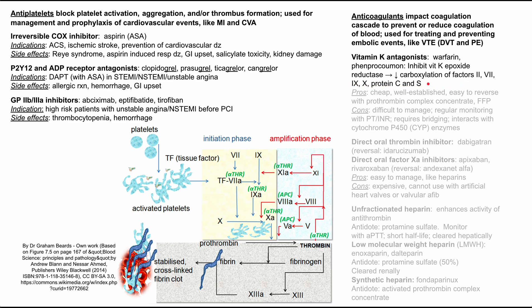Remember: 2, 7, 9, 10, and protein C and S — that's what vitamin K affects. The pros of warfarin are that it's cheap, well-established, and we understand the pharmacokinetics well. It's easy to reverse, specifically with prothrombin complex concentrate or fresh frozen plasma. The downsides are that even though we understand how it works, it's still difficult to manage. Vitamin K levels in the body fluctuate with diet — for instance, eating a lot of leafy greens one week and not the next can change the effectiveness of your warfarin dose. You need regular monitoring with PT/INR blood tests, which patients typically get at their PCP visits.